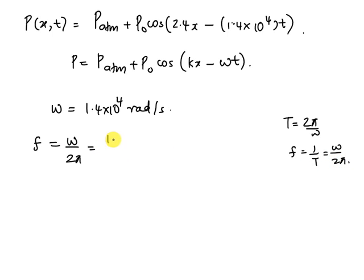On substituting the values, 1.4×10^4 divided by 2π yields the frequency as f = 2228 hertz.